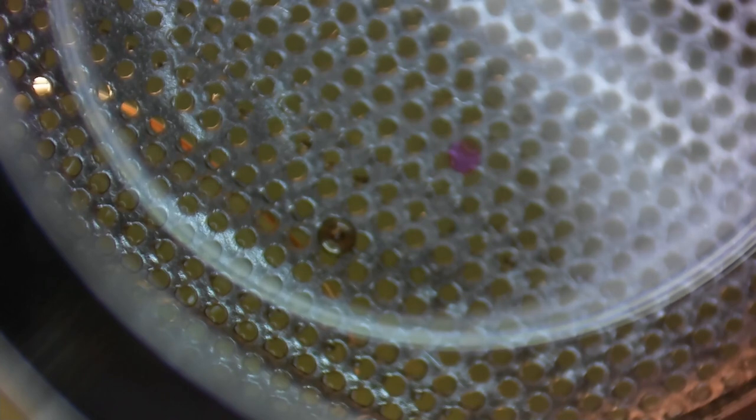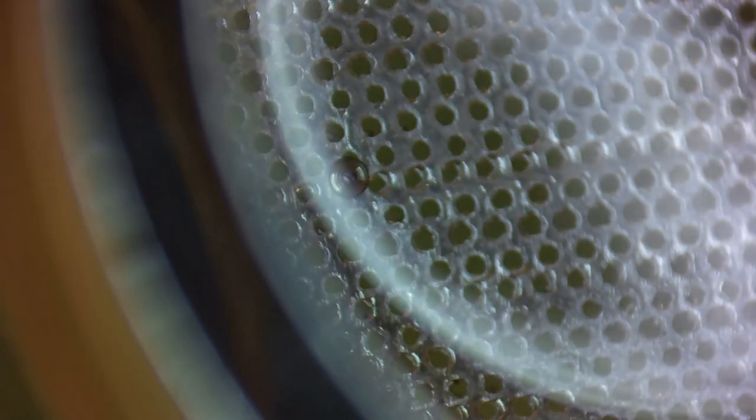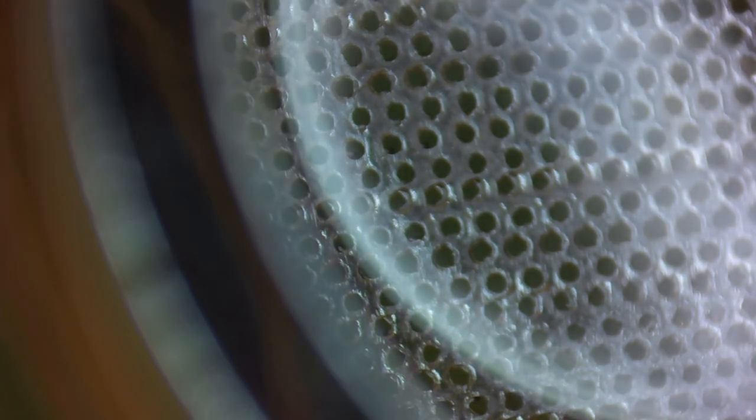Now with the two jewels separated, drop them into your cleaning jar with either IPA or hexane and let them soak for a couple minutes. Now remove the chaton and put it in a secure place. Now we can remove the end stone and inspect it for cleanliness.